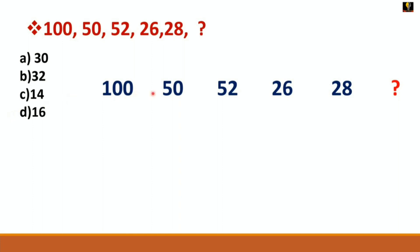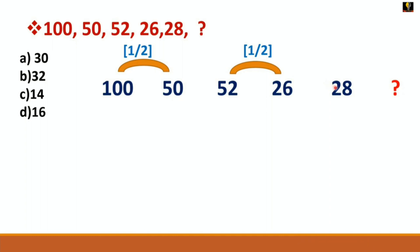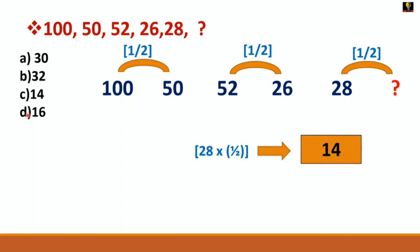Now you can write: 100, 50, 52, 26, 28 — find the next number. You can see: 100 divided by 2 = 50. Then 50 to 52 is a difference of 2. Then 52 divided by 2 = 26. Then 26 plus 2 = 28. So next: 28 divided by 2 = 14. The answer is 14, which is option C.